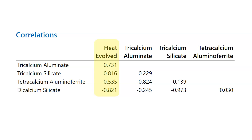Two of the ingredients show fairly strong positive correlations — as those ingredients go up, heat evolved tends to go up as well. The other two are negative, so as those ingredients go up, heat evolved tends to go down.